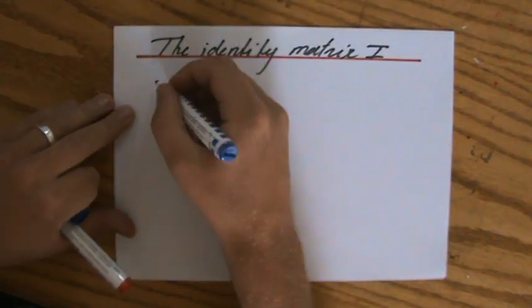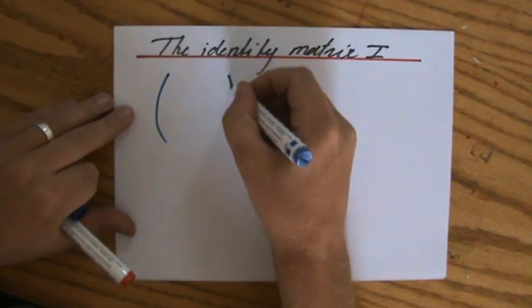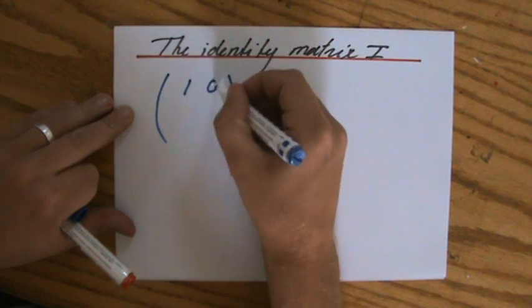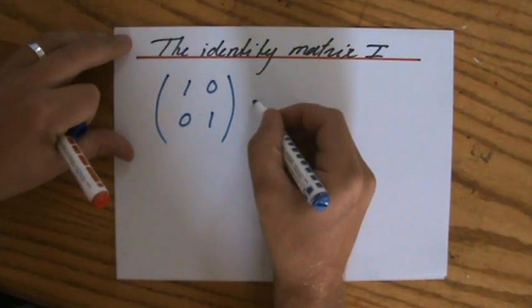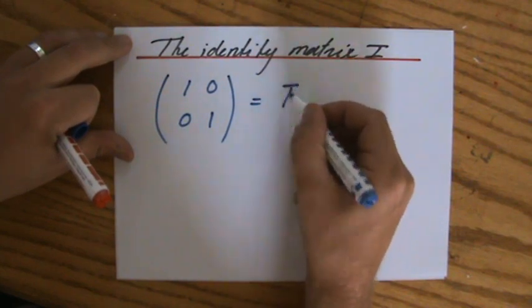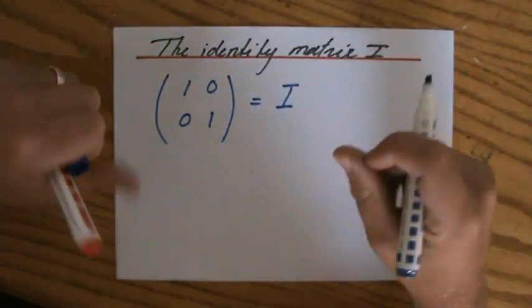And the identity matrix is a matrix that looks like this: [[1, 0], [0, 1]]. That is what we call the identity matrix, and usually they say that with a capital I, which means the identity.